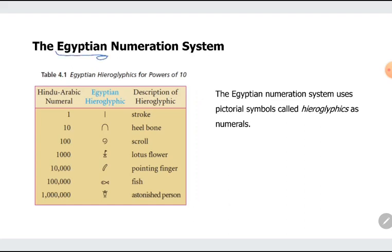Let's go to the Egyptian numeration system. So in the Chinese one, we use characters, Chinese characters, but the Egyptians used hieroglyphics.